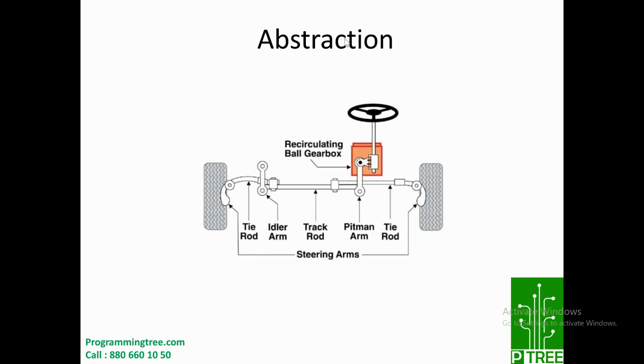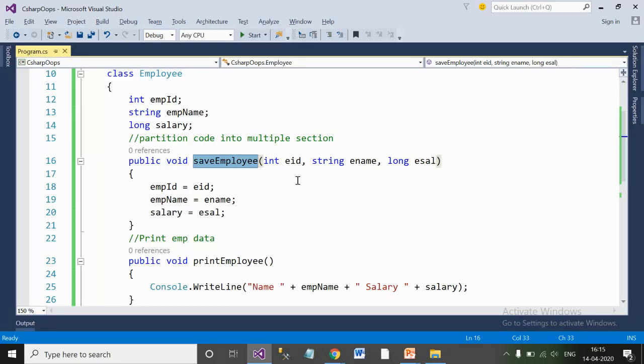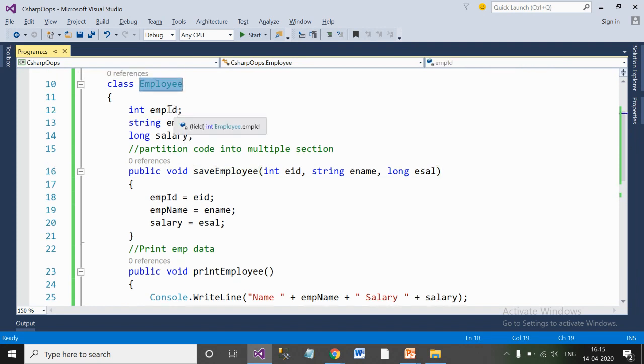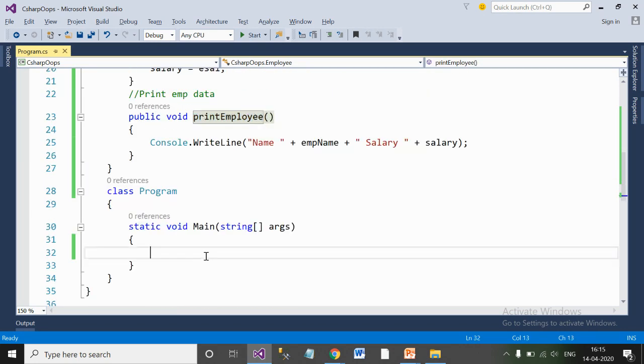That is the concept of abstraction and the point of this particular definition. We have already created an employee class with three members and save employee and print employee functions. I'll create the object of the employee class.